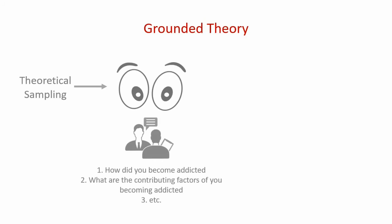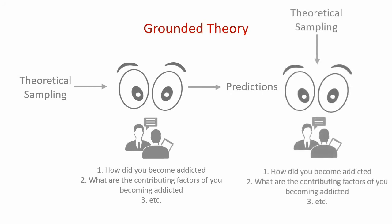Grounded theory also follows the deductive research approach: when the researcher makes initial observations they generate predictions which then need to be tested by doing further observations — either to confirm or refute those predictions. So practically, you create your theoretical framework based on initial observations, then get an entirely new group of people exhibiting the same behavior and ask the same questions, refining your theoretical contributions based on the analysis of that new data set.